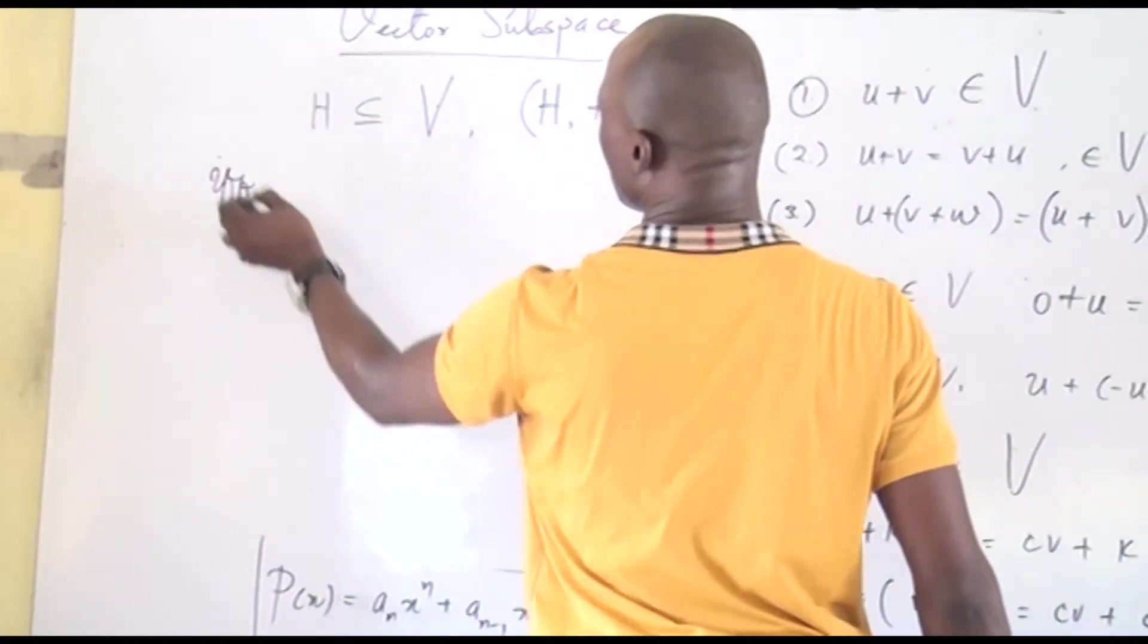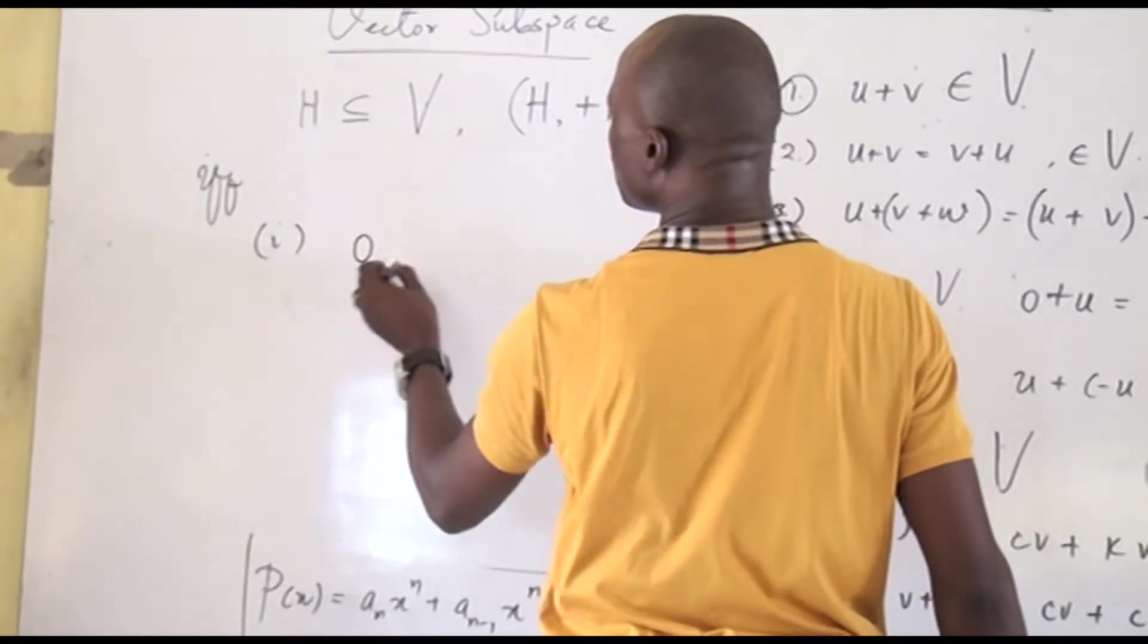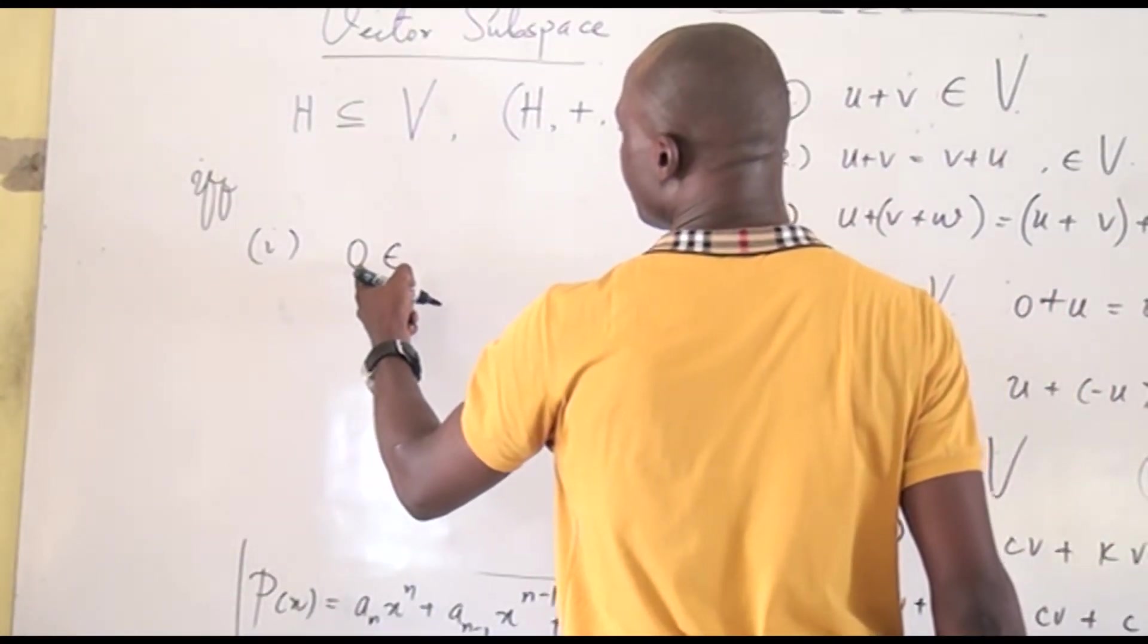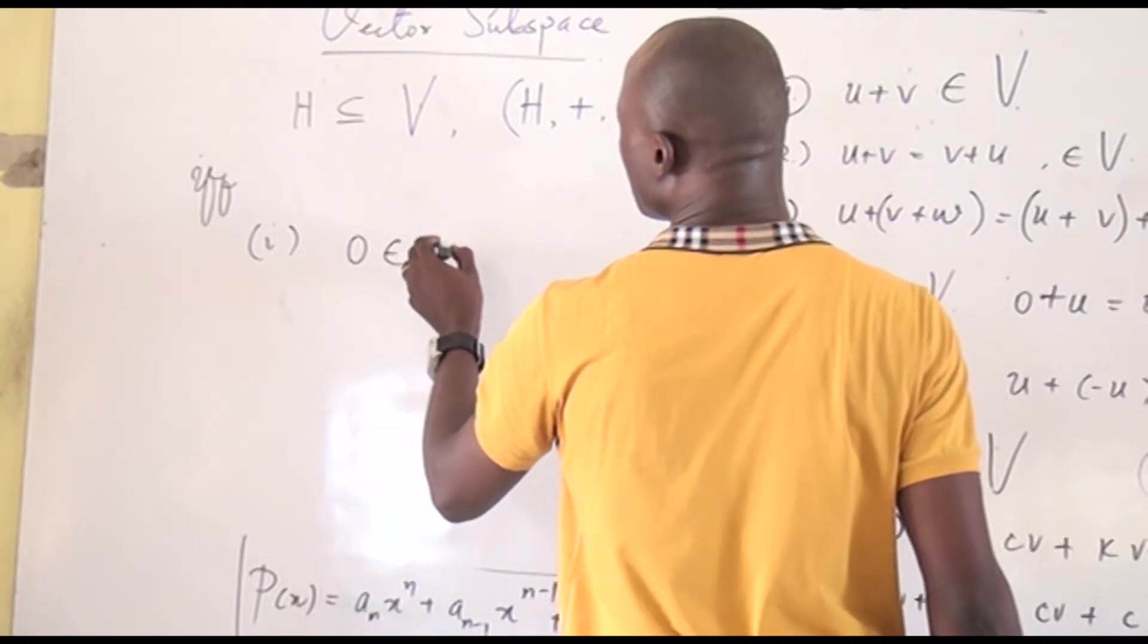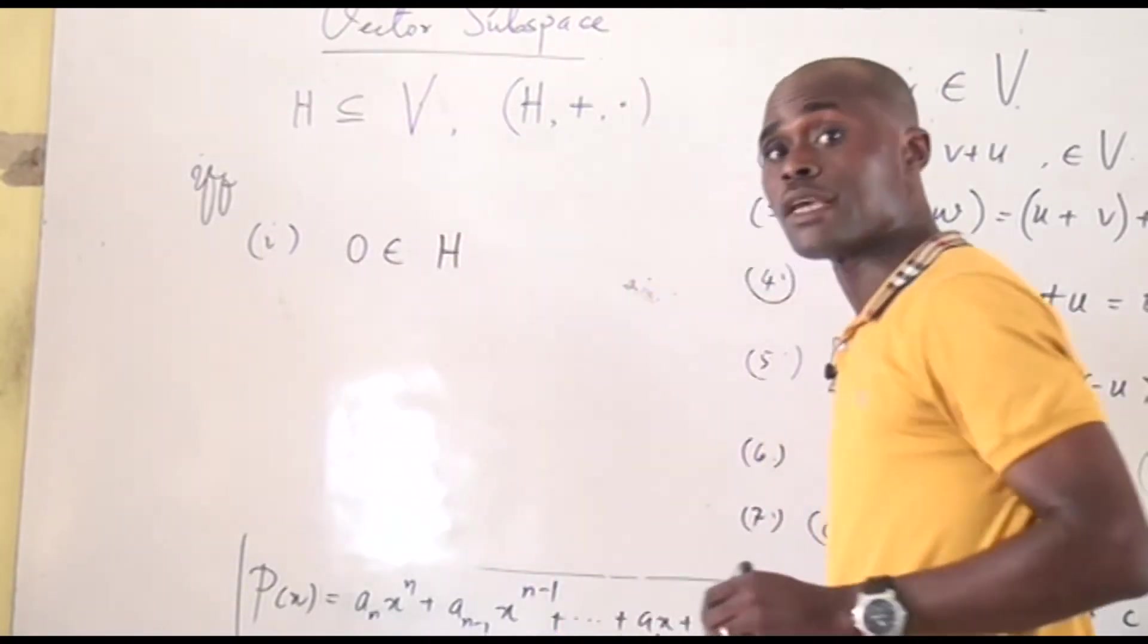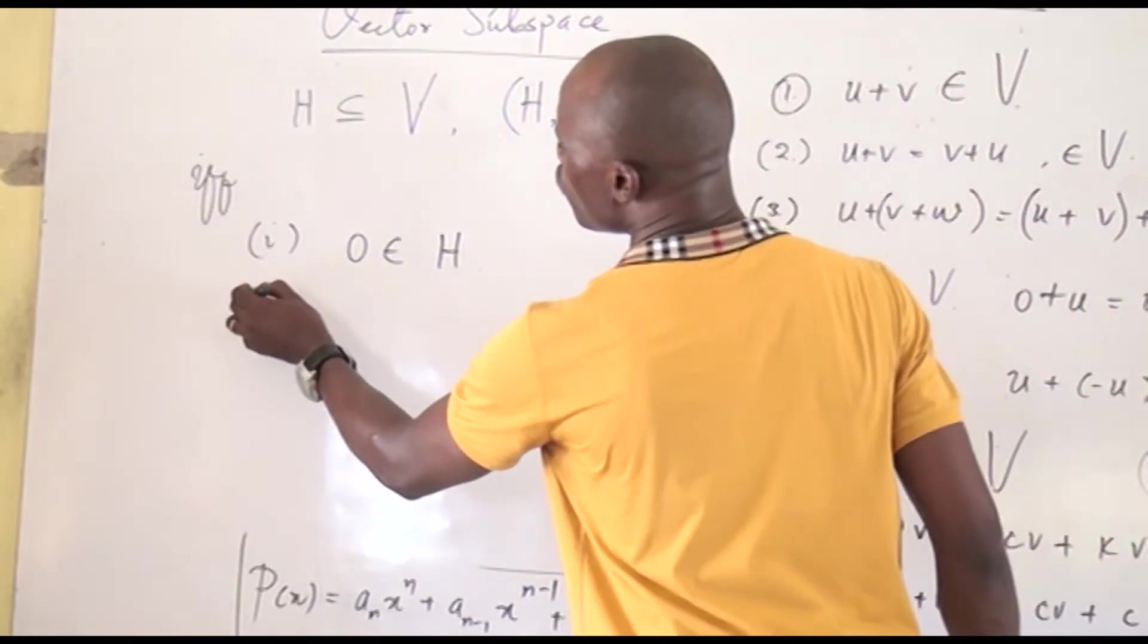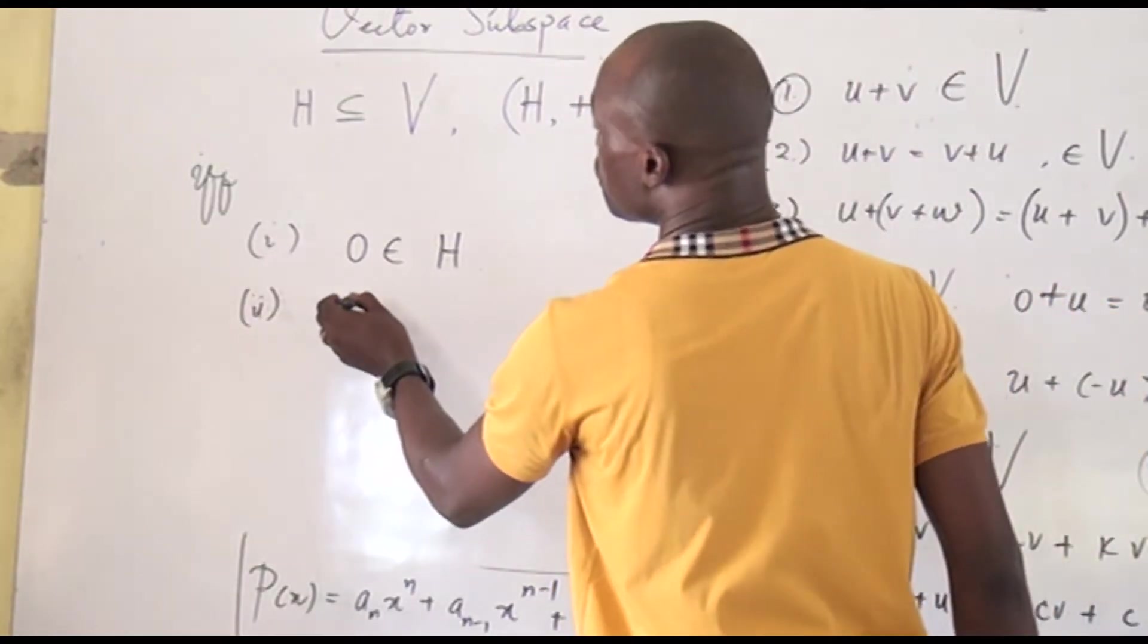So, how do we show that this vector subspace? If, and only if, number one, if we can show that the zero vector is a member of this. If we can show that the zero vector 0 ∈ V is a member of this.